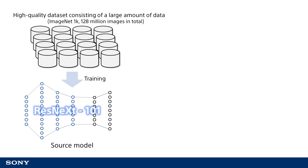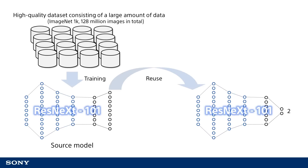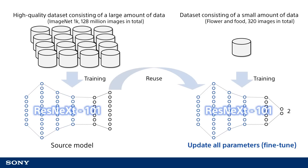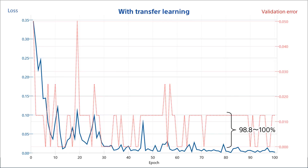Now, we will reuse ResNeXt-101, which was trained with 1.28 million images in the ImageNet 1K dataset. Changing the final layer to two categories of flower and food, we will train this layer by fine-tuning all parameters including reused ones. Although it is a simple task to classify input images as flowers or food, with only a 100 epoch training process, we achieved an accuracy rate of 98.8 to 100%, which is significantly higher than the performance of a neural network not trained using transfer learning. This shows that we obtain nearly 100% accuracy quite early in the training process.